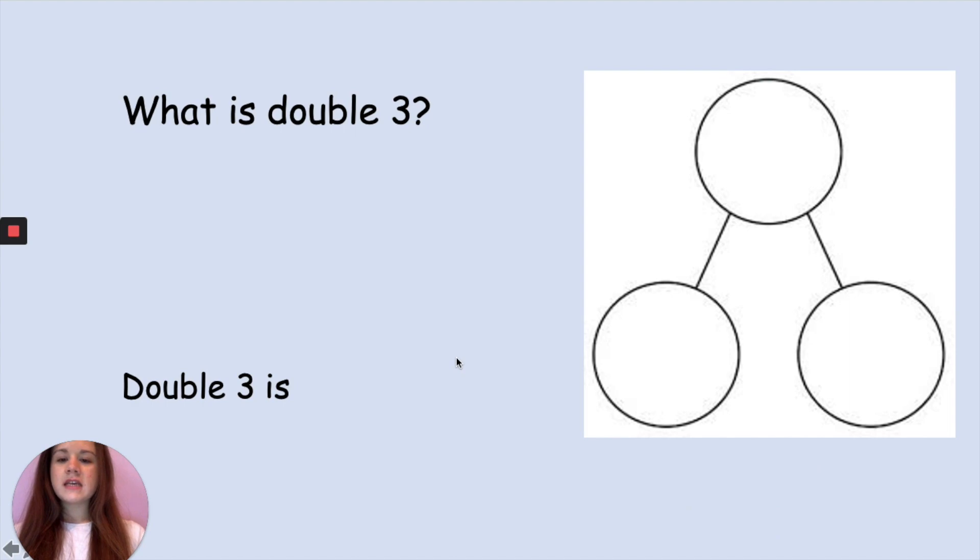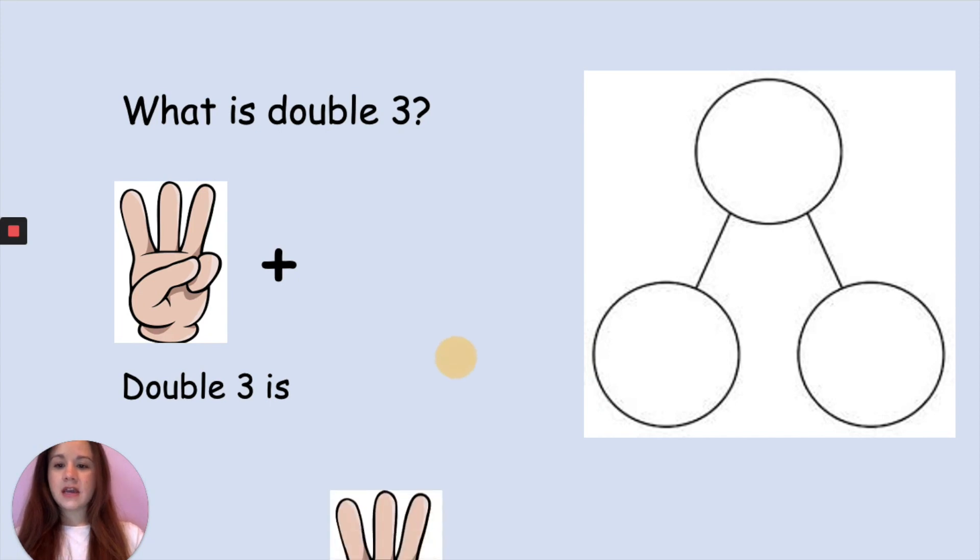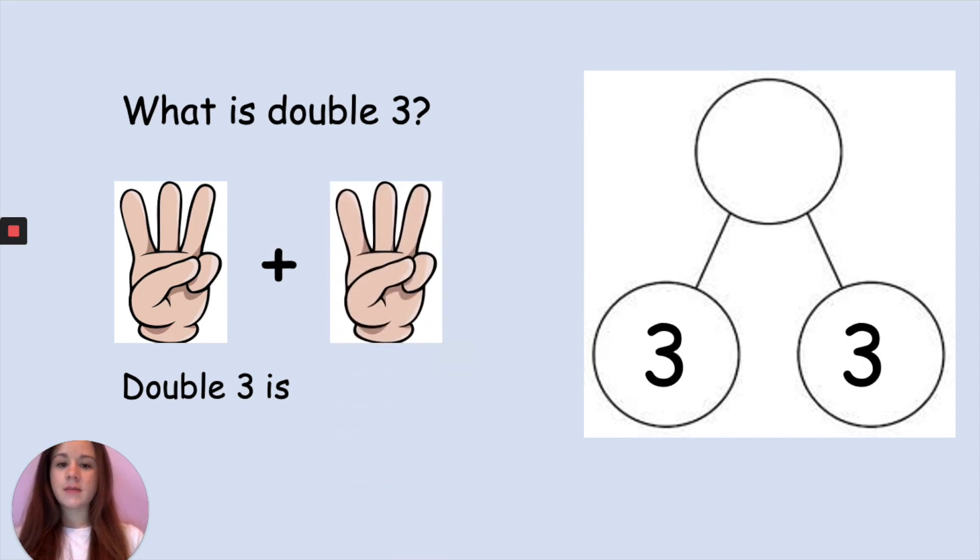What is double 3? This time we have 3 fingers. 3 add what will we be adding if we are doubling? Another 3. 3 add 3, so our parts in our part-whole model are 3, make 6. 3 add 3, 1, 2, 3, 4, 5, 6, and your whole is 6. So our sentence will be double 3 is 6. 3 add 3 equals 6.